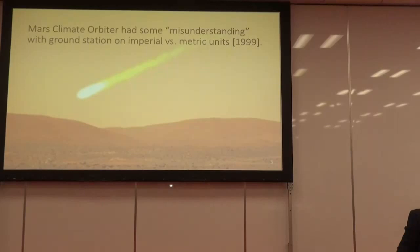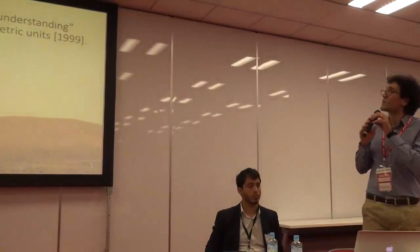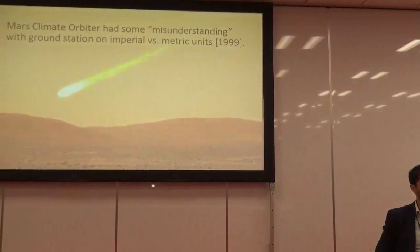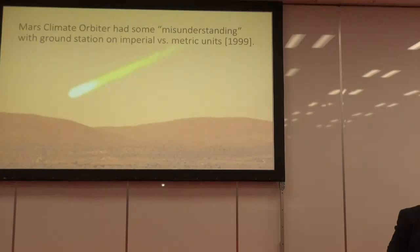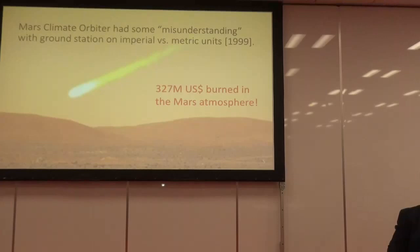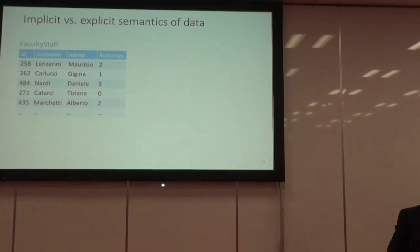Here is a simple example where lack of semantics made things go terribly wrong. In 1999, the Mars Climate Explorer was sent to Mars, but there was a misunderstanding between the ground station and the orbiter regarding measurement units. The orbiter expected imperial units, but the ground station was sending metric units. This caused the orbiter to take a wrong path and crash into Mars — a loss of 327 million euros due to this simple lack of semantic understanding.